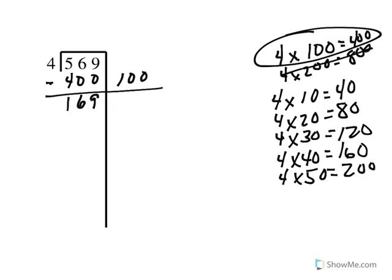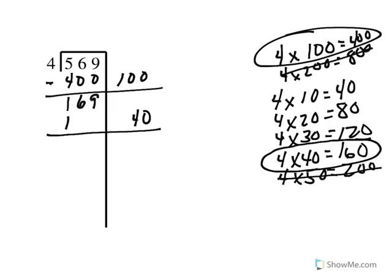4 times 50 is 200, and 200 is too big — I can't subtract 200 from 169. But I can subtract 160 from 169. So I'm going to subtract 40 groups of 4, which is 160. When I subtract, I'm going to have 9 left over.